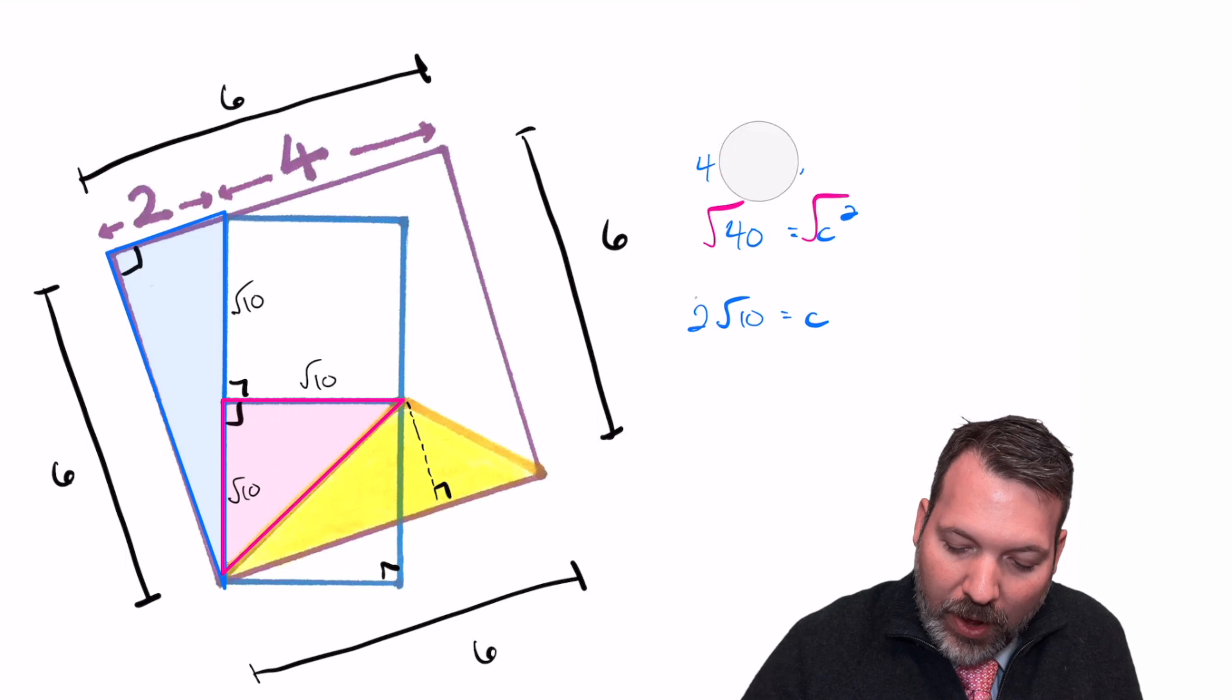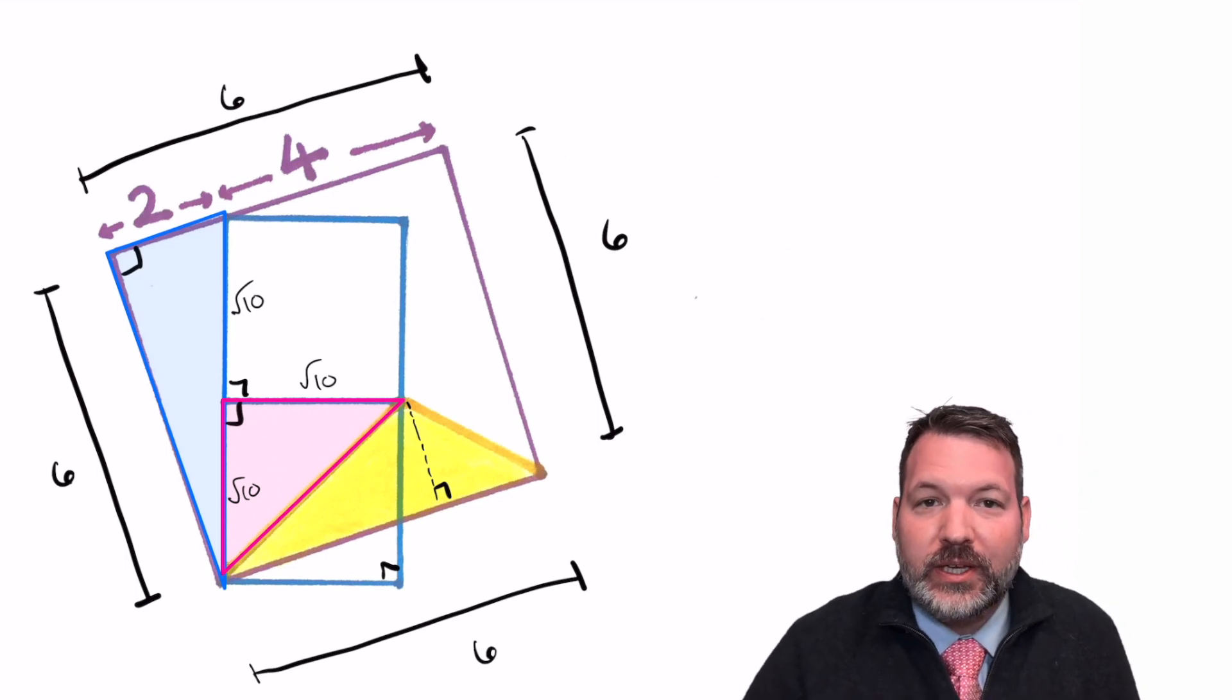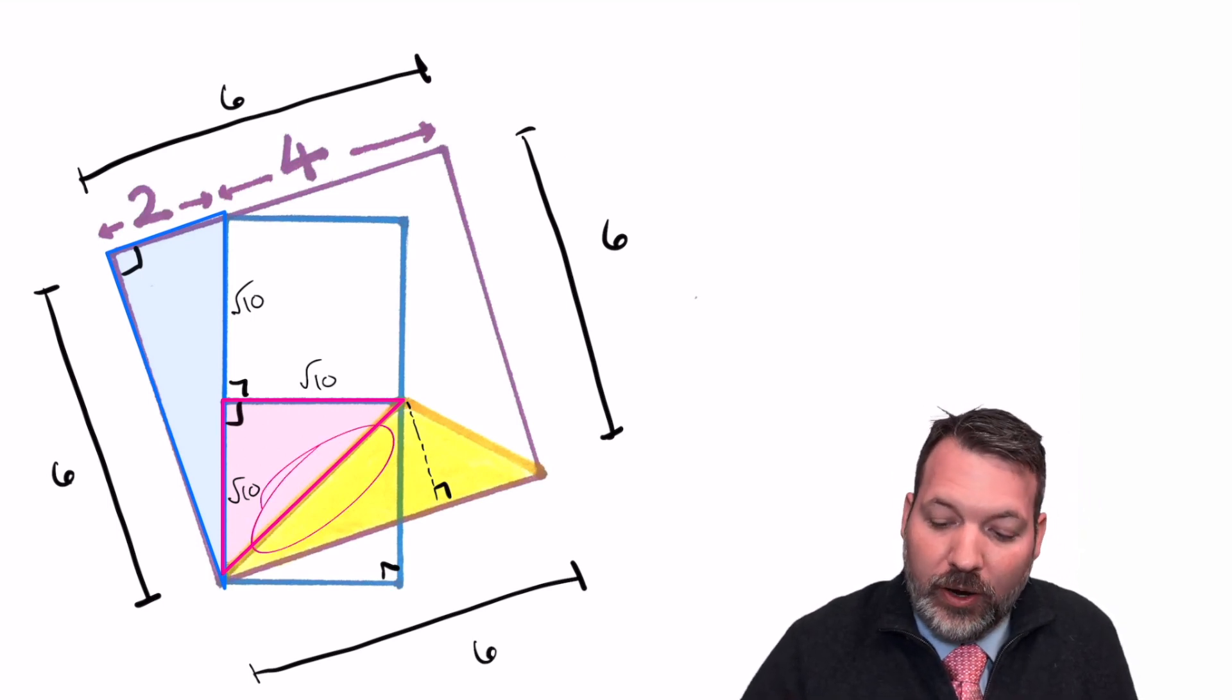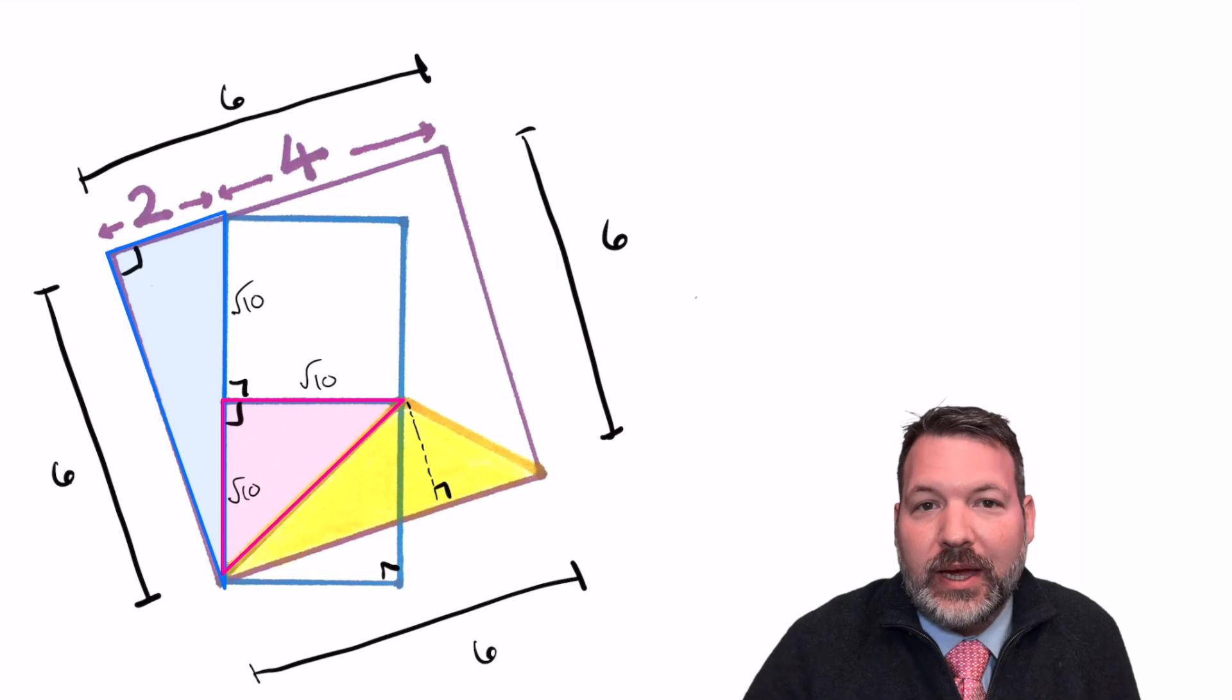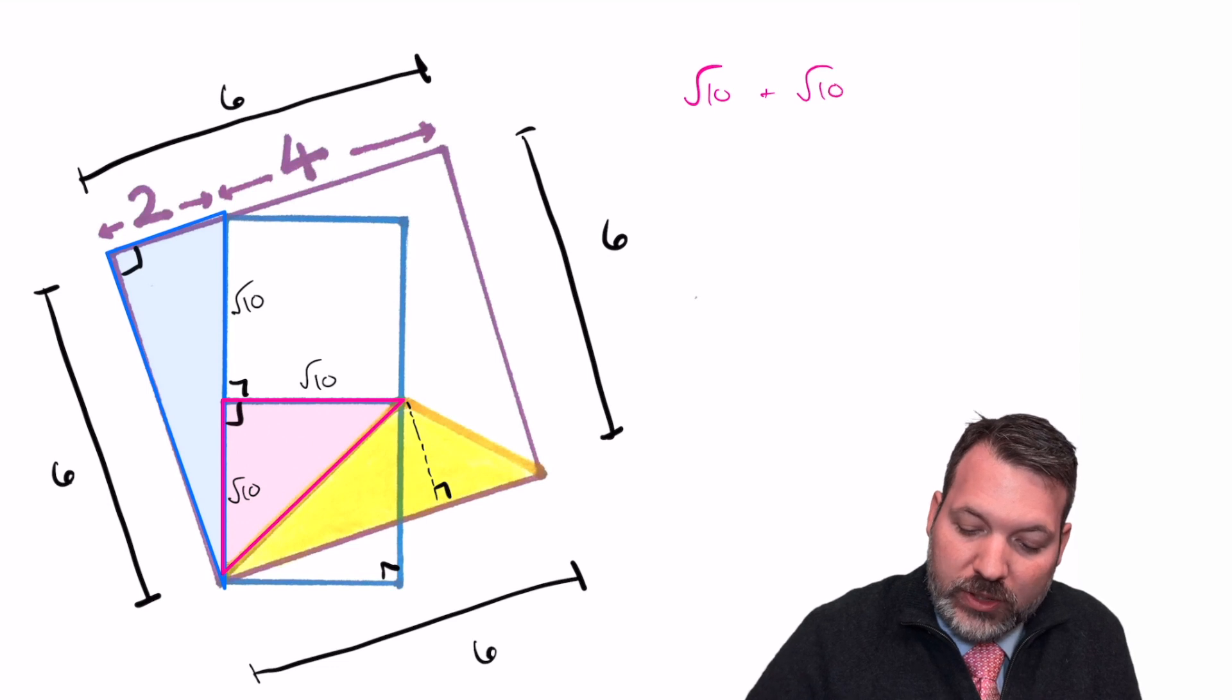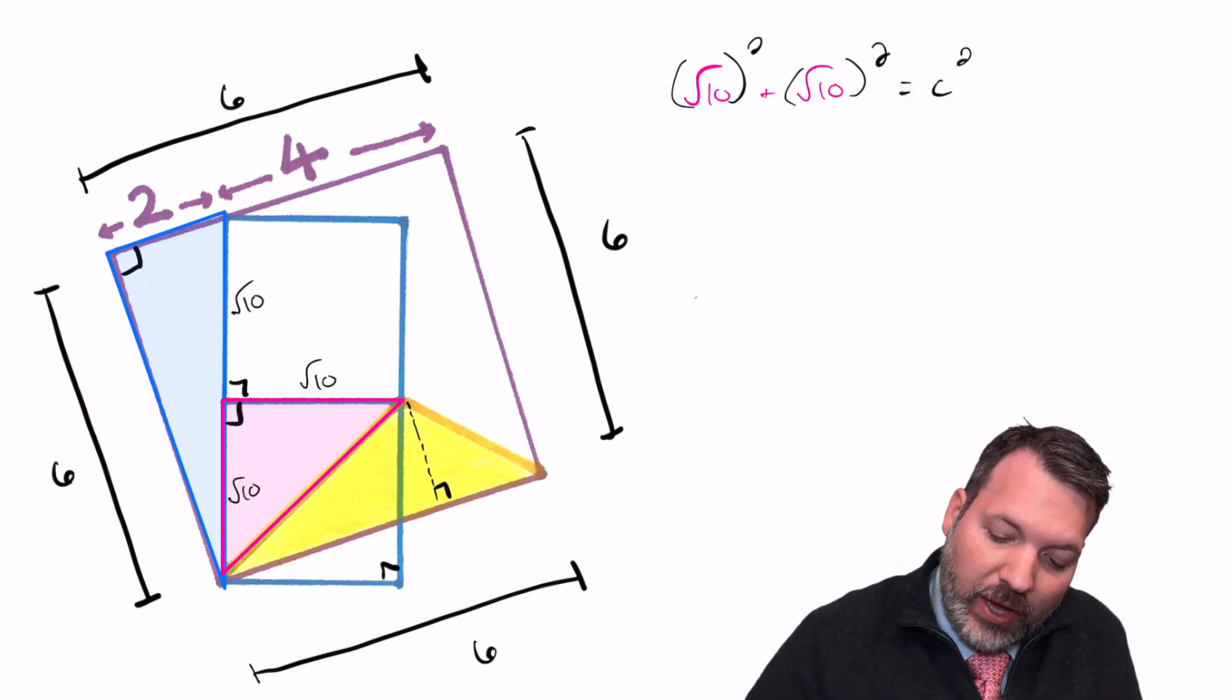And now it's feeling like we are just barreling along toward a solution here, because the hypotenuse of that particular right triangle, which is also the diagonal of the smaller square, is the same thing as the second length along that yellow triangle that we're interested in. √10 squared plus √10 squared is going to give us the length of that diagonal, or of that hypotenuse, they're the same thing, we'll just keep calling it c squared for fun,